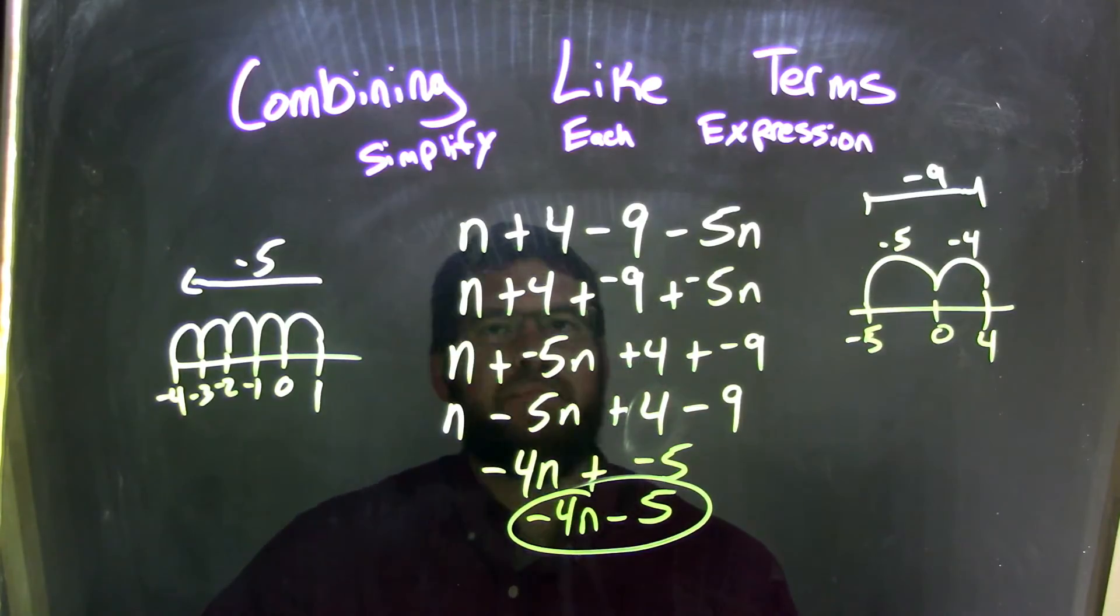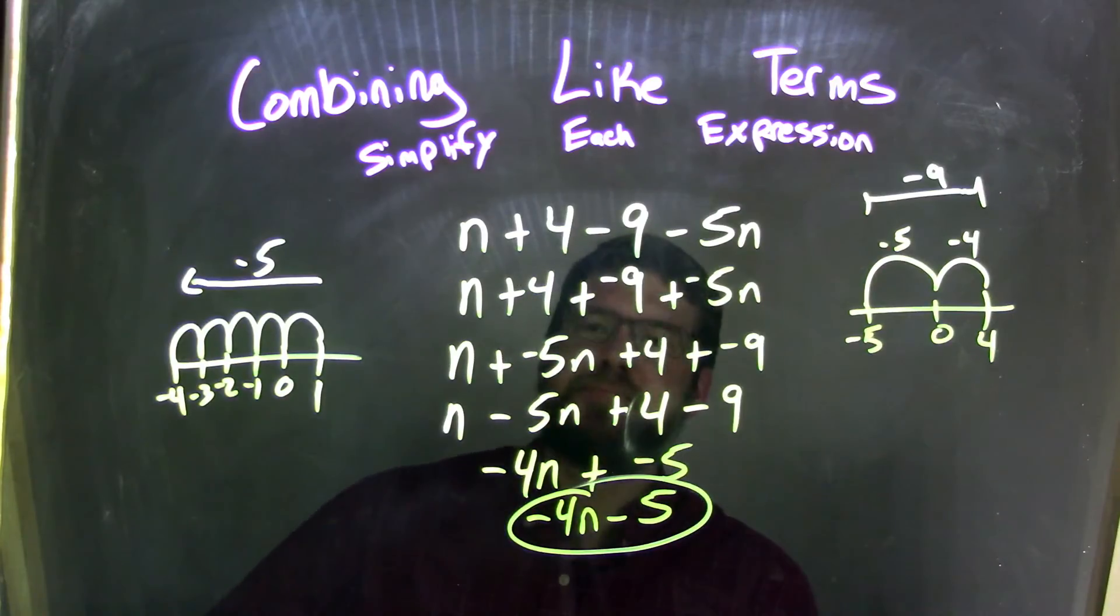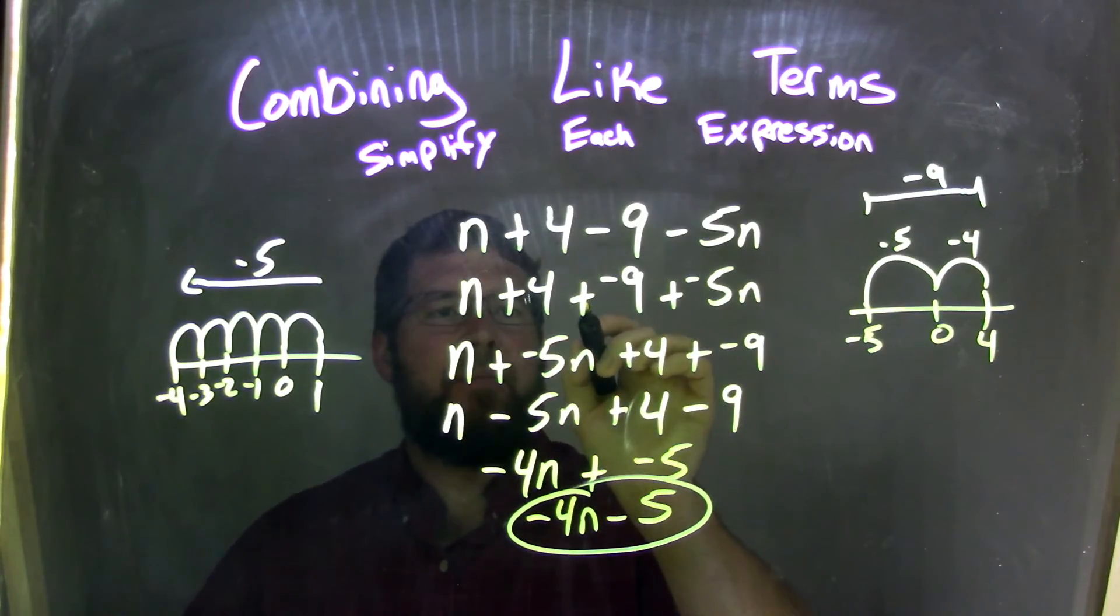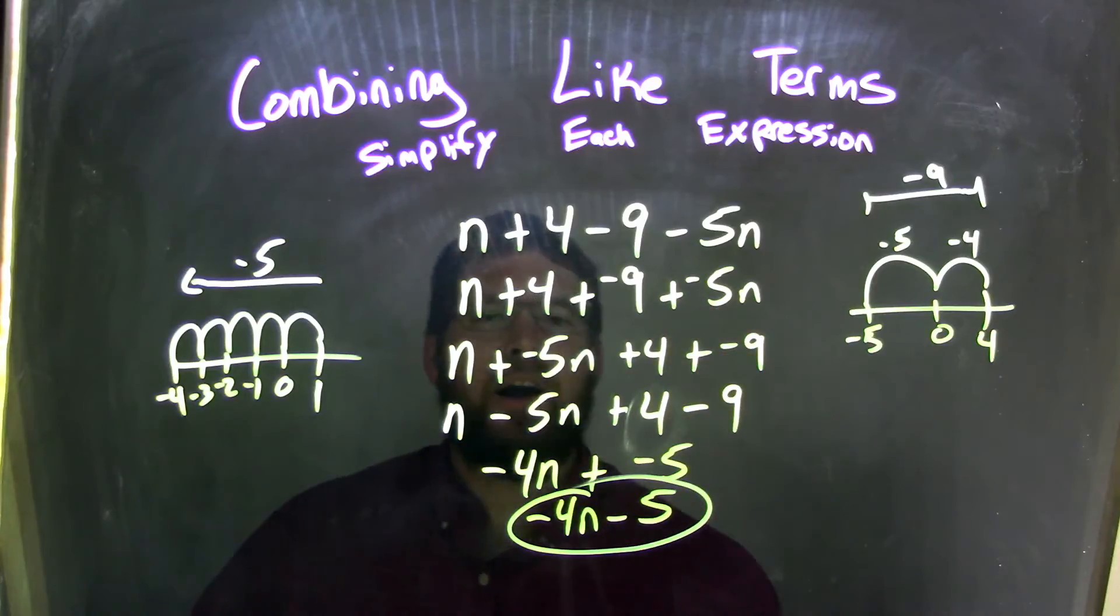So let's recap. We have n plus 4 minus 9 minus 5n. Well, instead of writing subtraction, I added a negative. So every single time I saw a minus, I added a negative. So I added plus a negative 9 and plus a negative 5n.